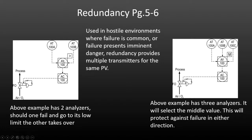With the high selector, it would automatically switch to the other analyzer that has the proper operating signal. With three analyzers, the median selector takes the middle reading out of the three. Even when all three are operating with some variation — maybe one's high, one's low, one's in the middle — it will select the middle one to give what they hope is the most accurate measurement.